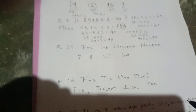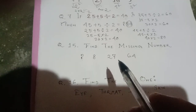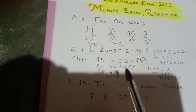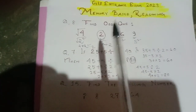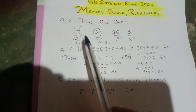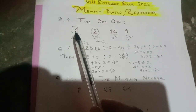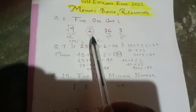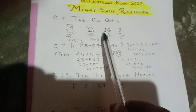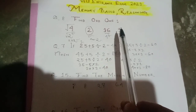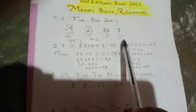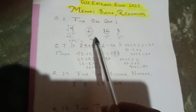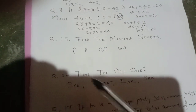Now, find the missing number. Recapping the previous question: the square root of 4 is 2, the square root of 16 is 4, and the square root of 9 is 3, so the odd one was 2. Now in this new question, find the missing number in the series: 8, 27, 64.